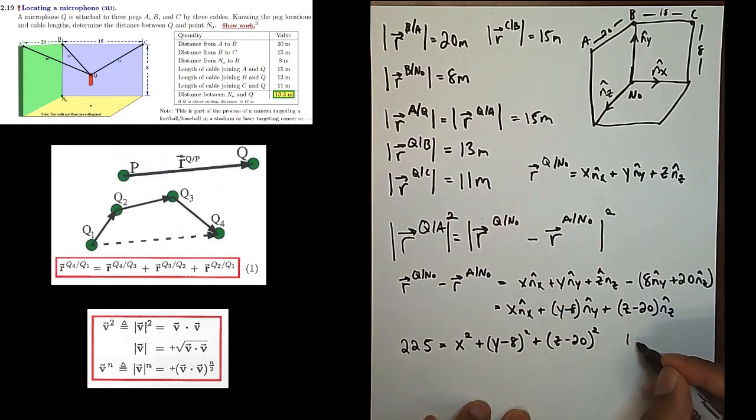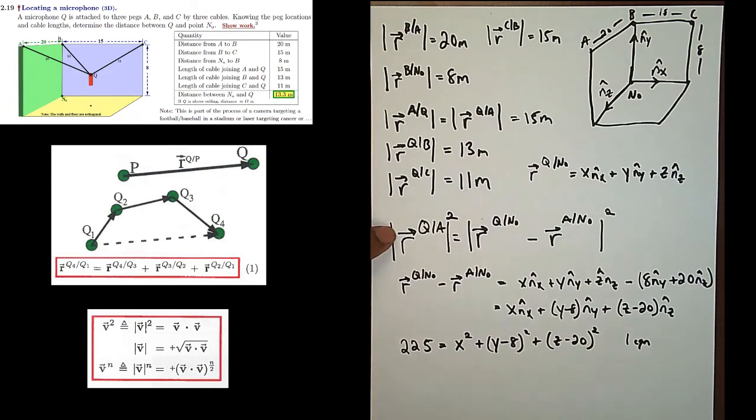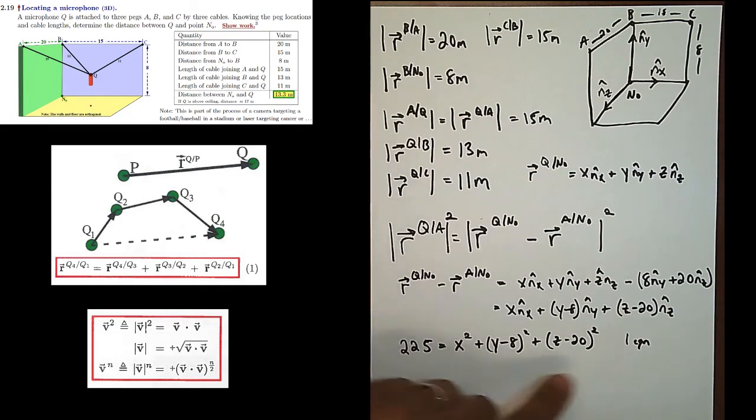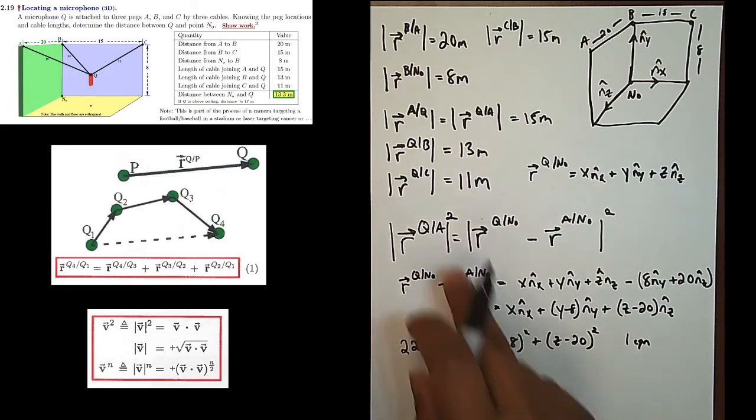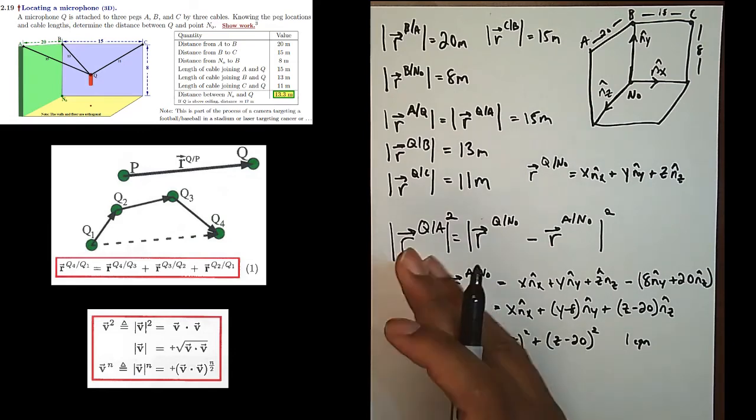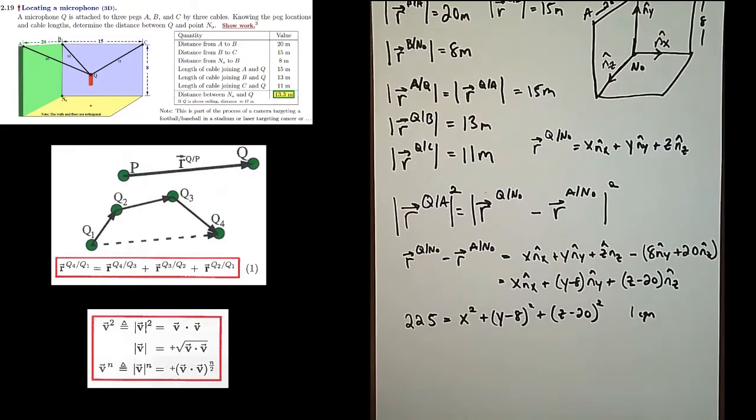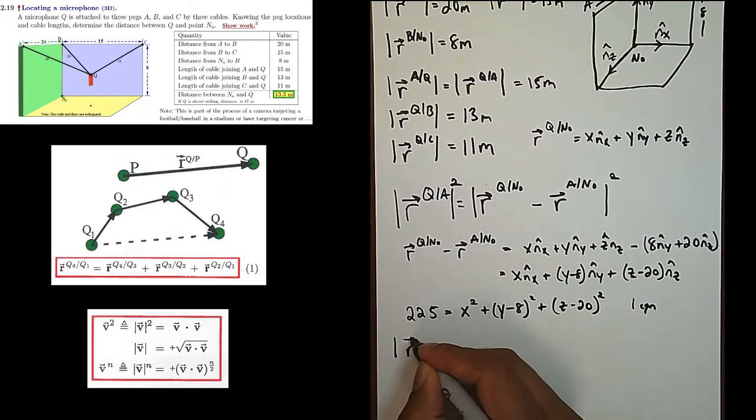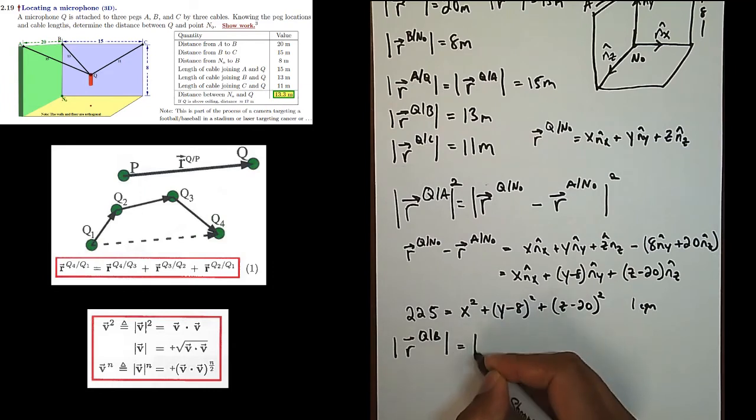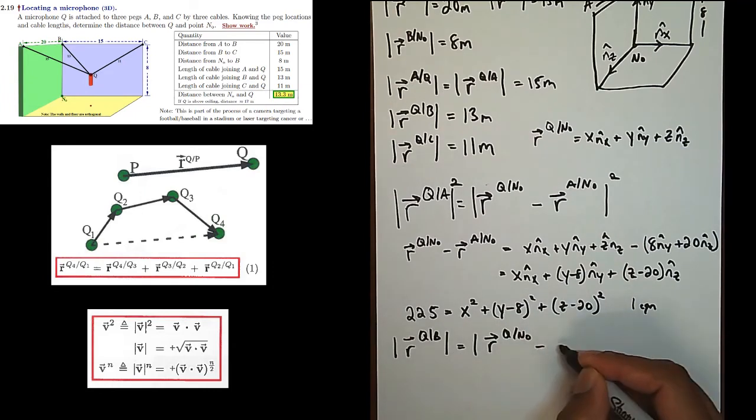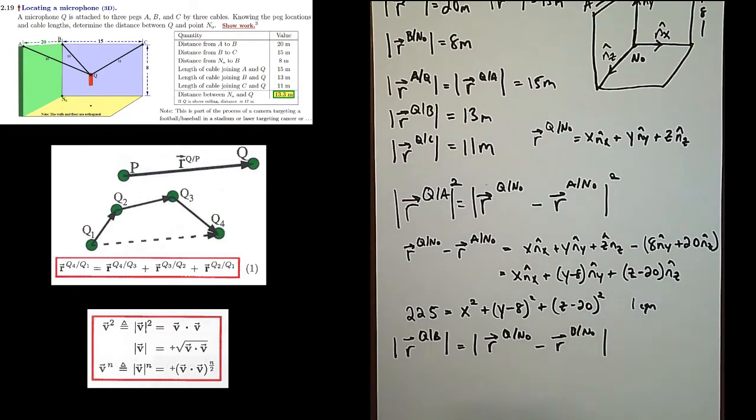And this is one equation. It was one equation because even though we started with vectors, we took its magnitude, which gets a scalar product. So we have one equation, but we still have three unknowns x, y, and z. So r Q from A is only one piece of known information we have. Our other two will come from the other cables. So I'll leave the solution to you, but the setup is much the same. r Q from B is going to be r Q from N0 minus r B from N0. And here's our second equation. Our third equation uses C, r Q from C is r Q from N0 minus r C from N0.